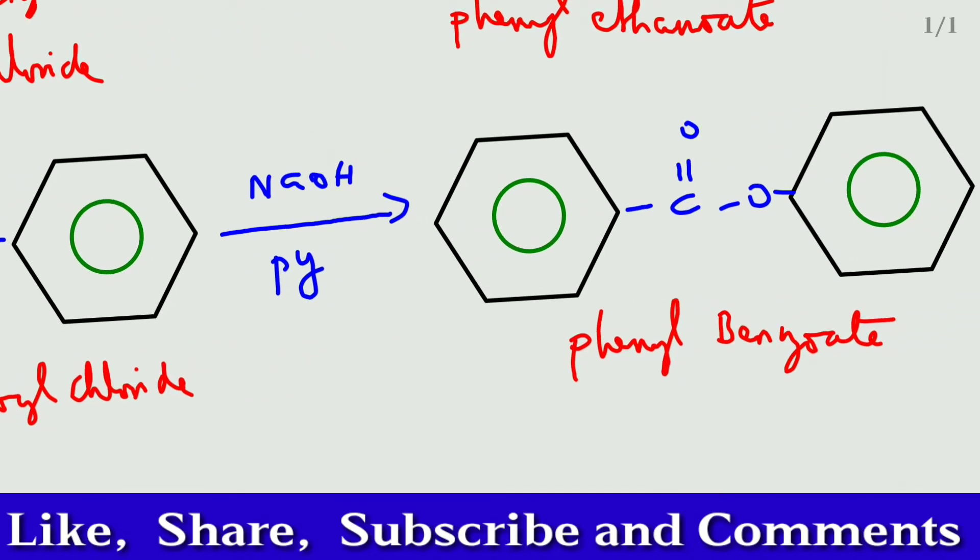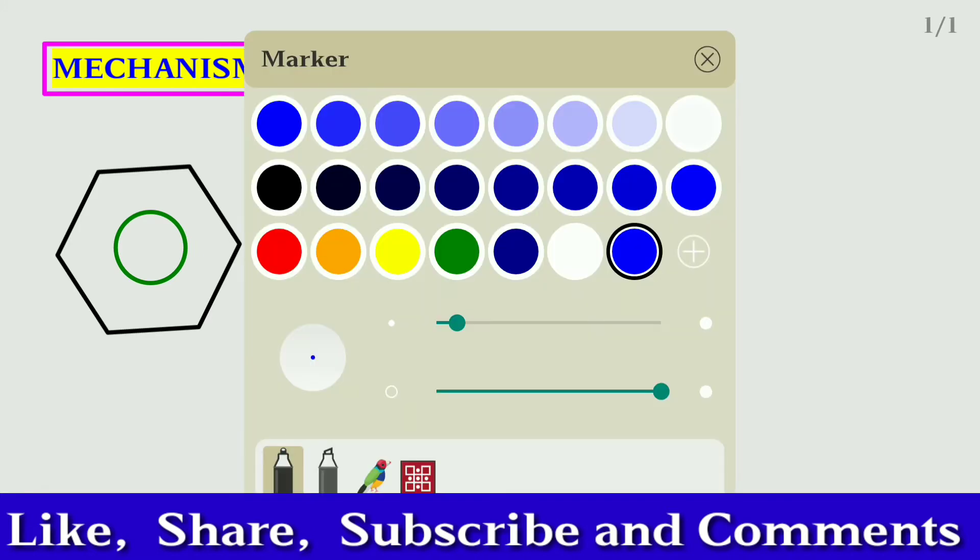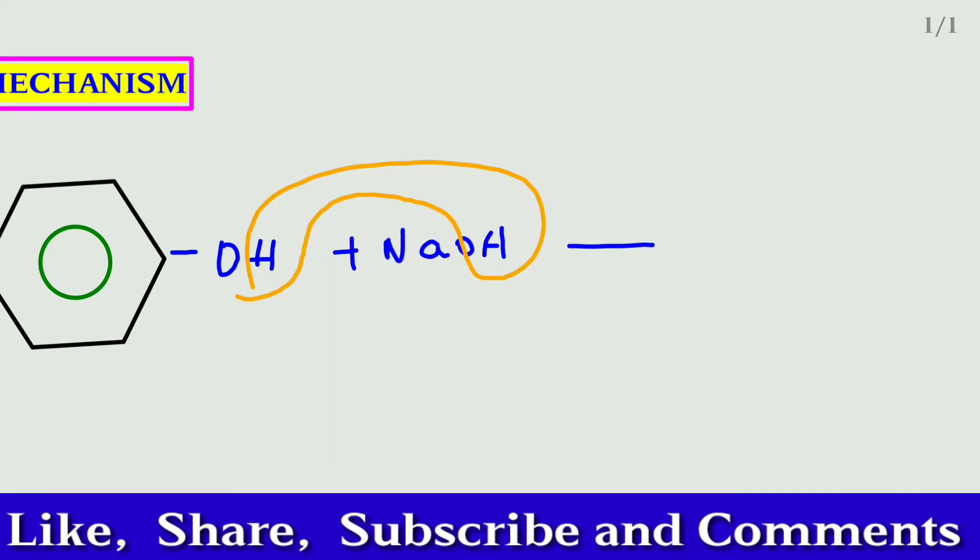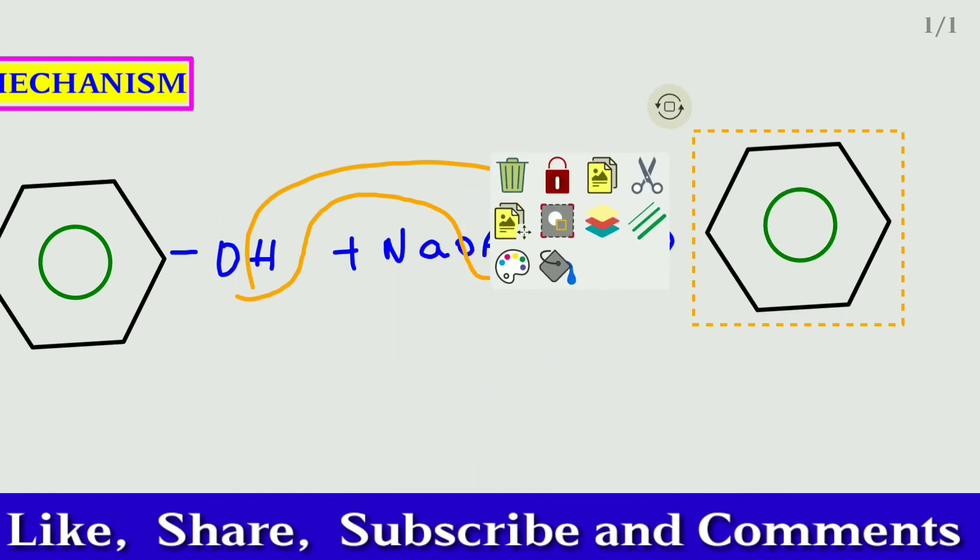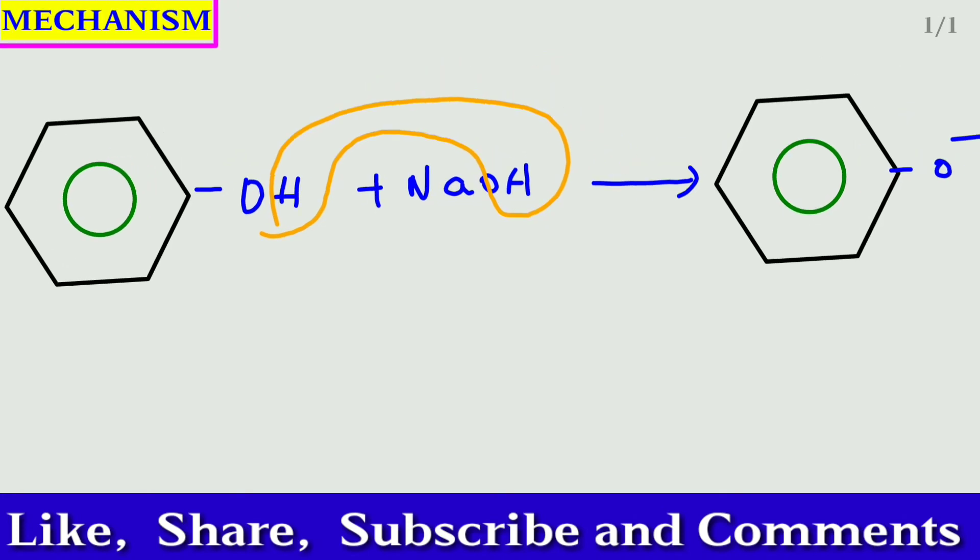Let me discuss the mechanism of the reaction. The phenol reacts with sodium hydroxide. Here removal of the water molecule - we can get the product like phenolate ion, that is C6H5O minus plus Na plus plus H2O. This is the first step and let me take the second step.